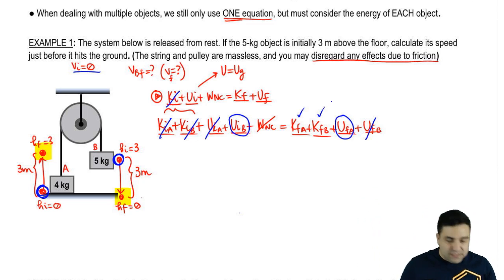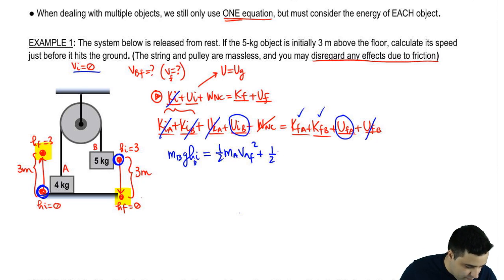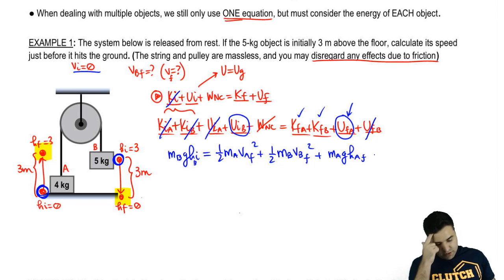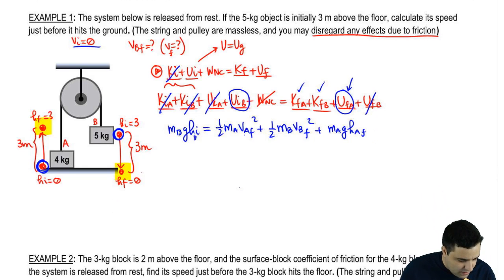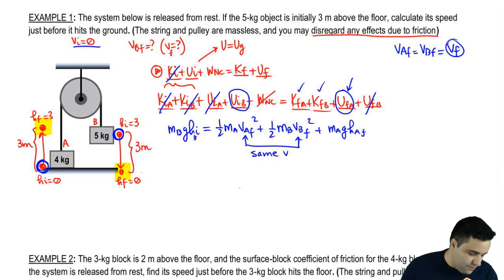And then I have kinetic energy of both of these guys because they both have speeds after this thing moves. So I can start writing this out here. This is going to be MB G H initial equals half MA V A final squared, half MB V B final squared, plus MA G H A final. Those are all the letters. One thing to realize is that this V here is the same. So instead of calling it, I'm going to say same V. Instead of calling it VA final or VB final, I'm just going to call it V final, which means that if these two are the same, I'm going to be able to combine them.